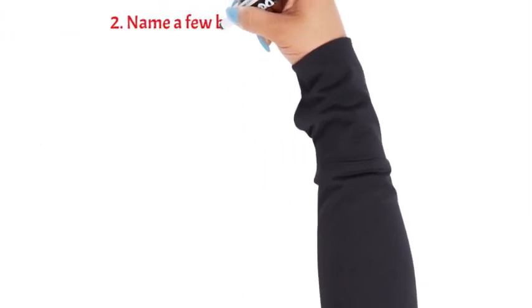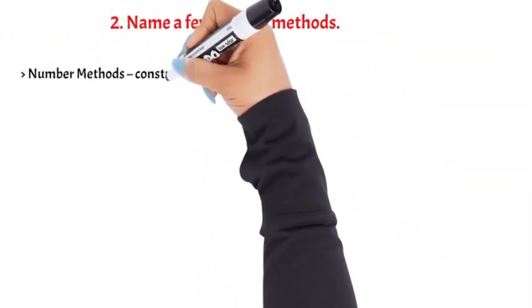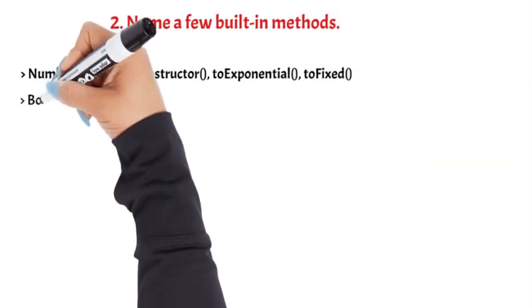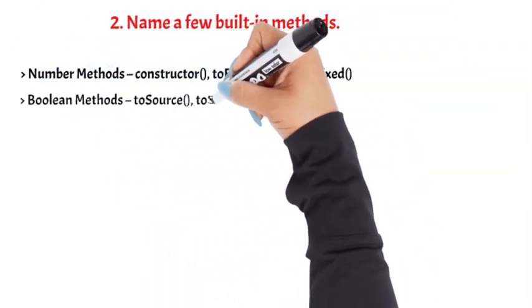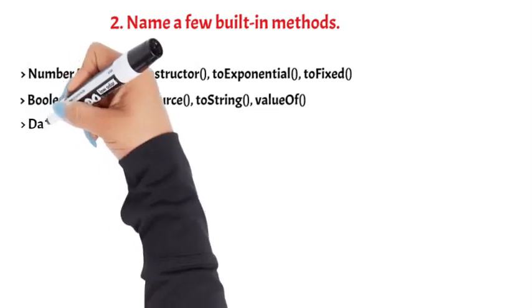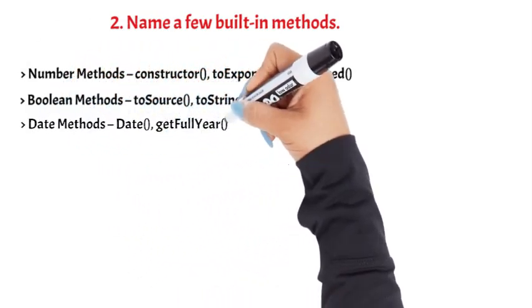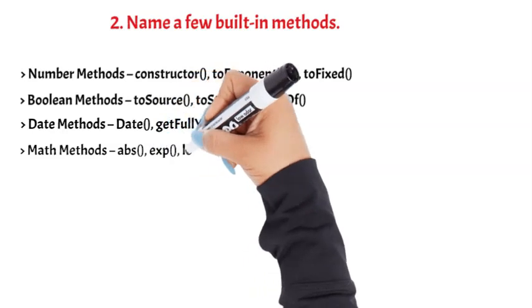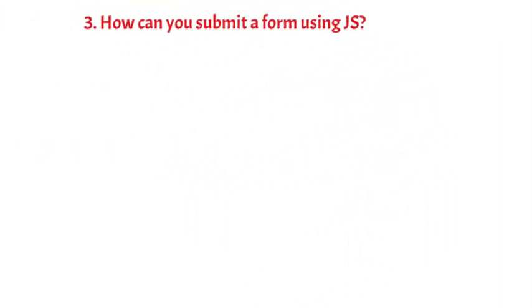Question 2: Name a few built-in methods. Number methods include Constructor, ToExponential, and ToFixed. Boolean methods include ToSource, ToString, and ValueOf. Date methods include Date, GetFullYear, and GetHours. Math methods include Abs, Exp, and Log.